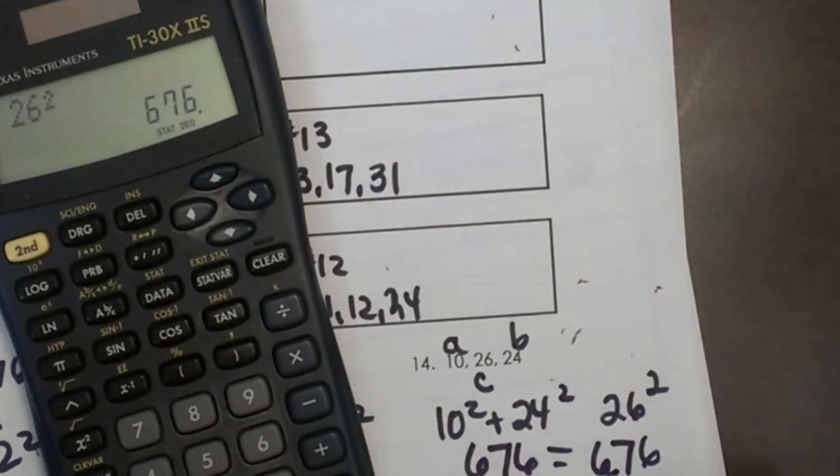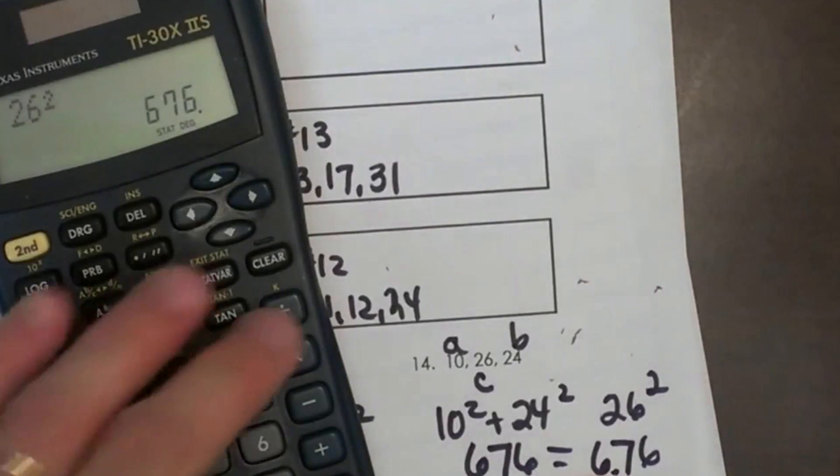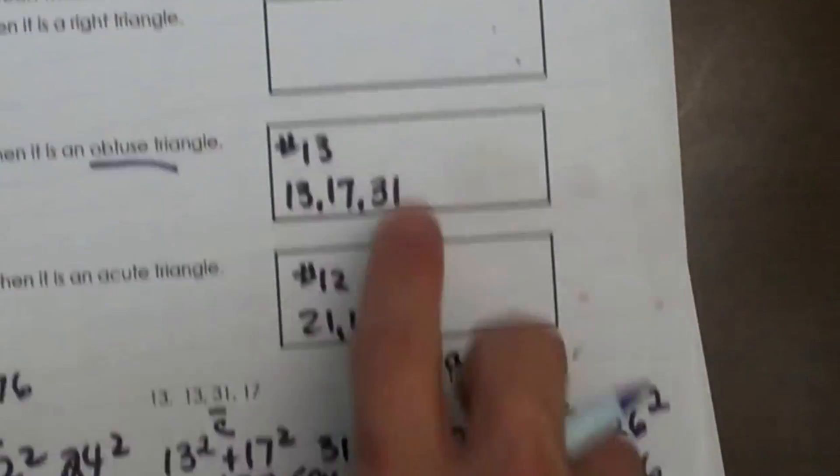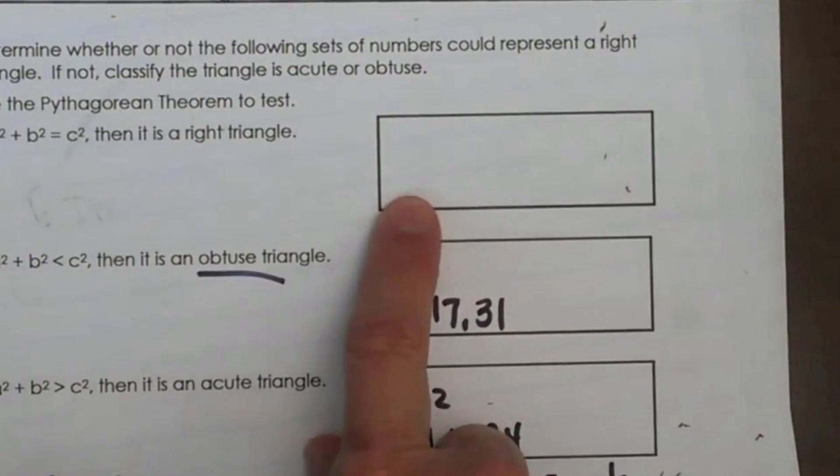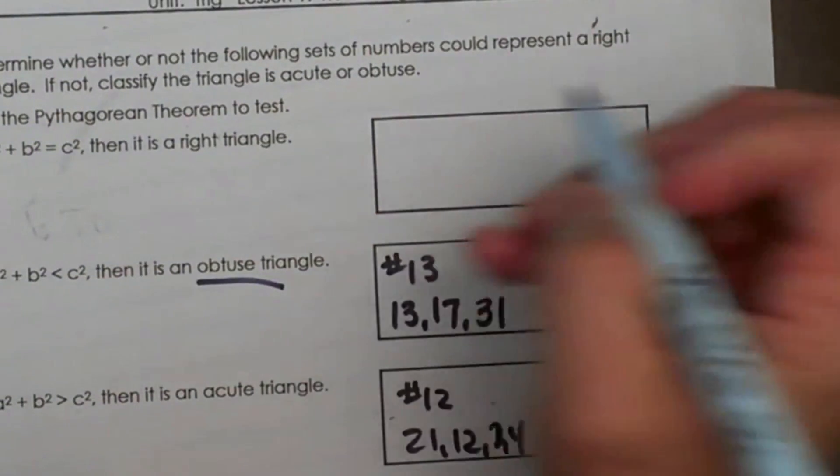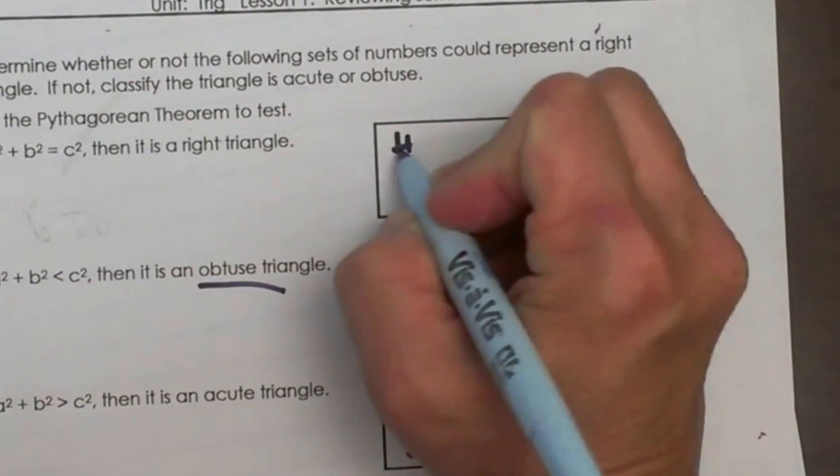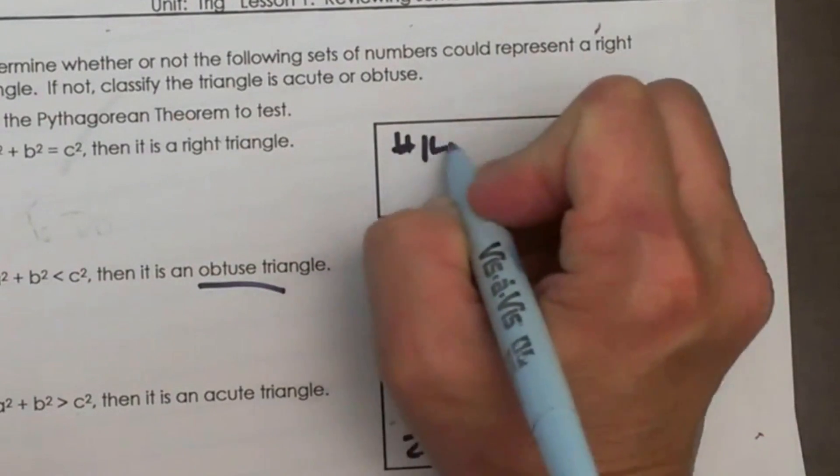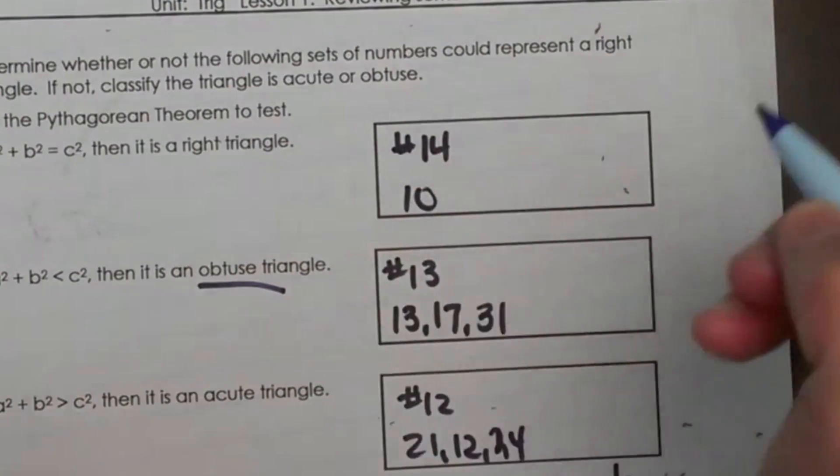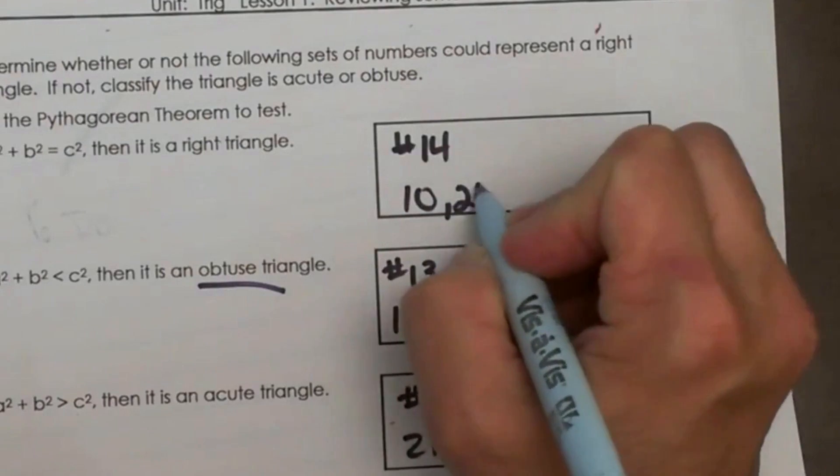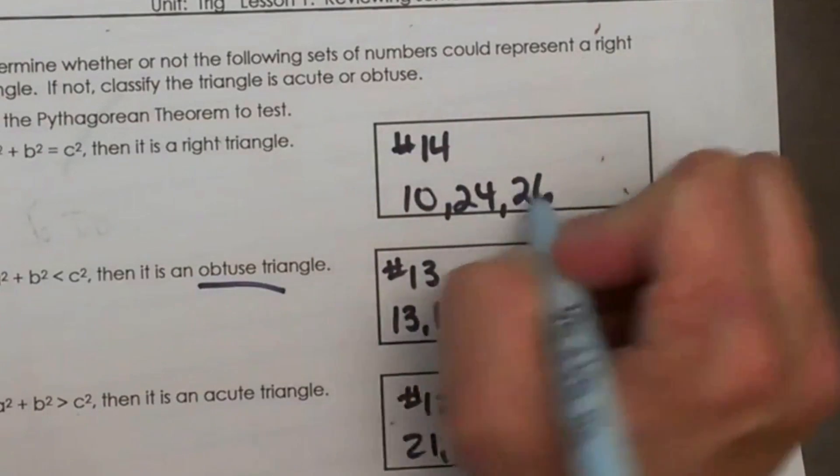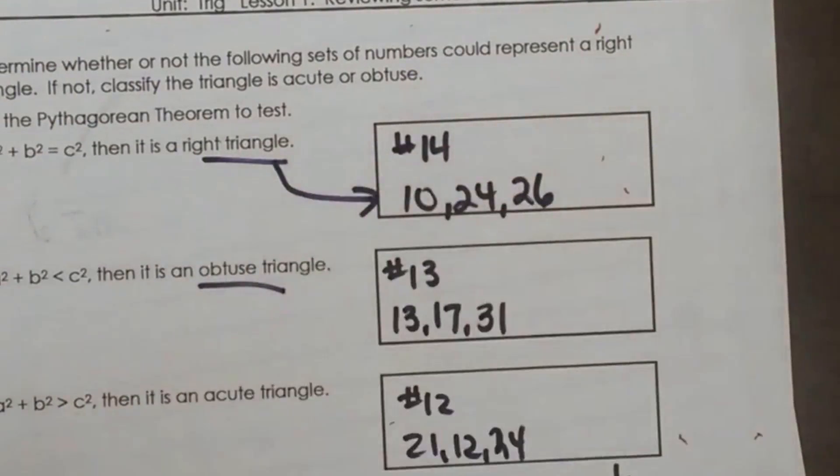Now this time C is equal to the sum of A squared plus B squared, so that means it is a right triangle. So the sides of, which is number 14, the sides of 10, 24, and 26 are a right triangle.